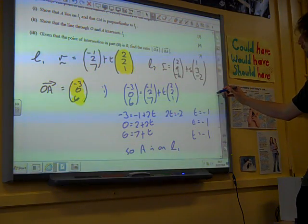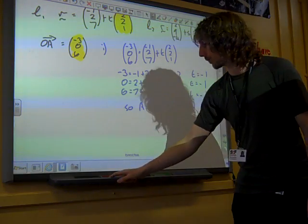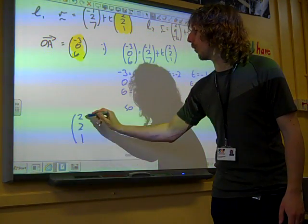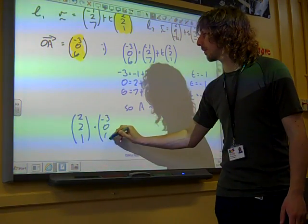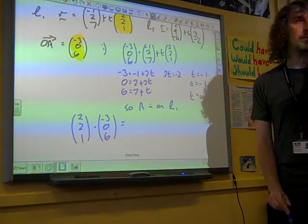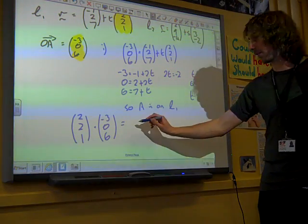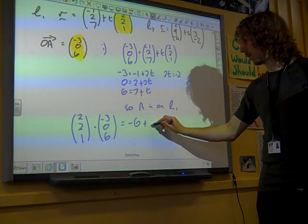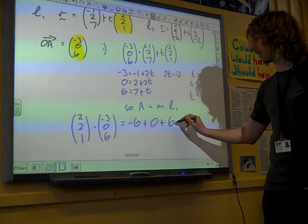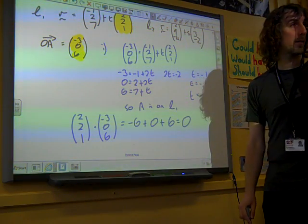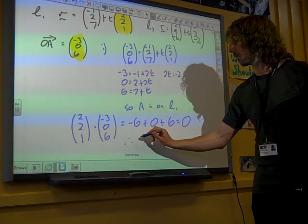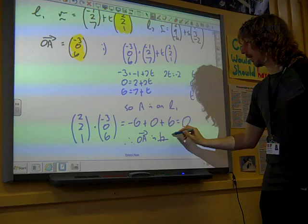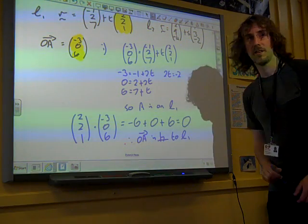So we need to do 2, 2, 1 dotted with minus 3, 0, 6. That's 2 times minus 3, which is negative 6, plus 2 times 0, which is 0, plus 1 times 6, which gives us an answer of 0. Therefore, OA is perpendicular to L1. There wasn't an awful lot of tricky stuff in that.